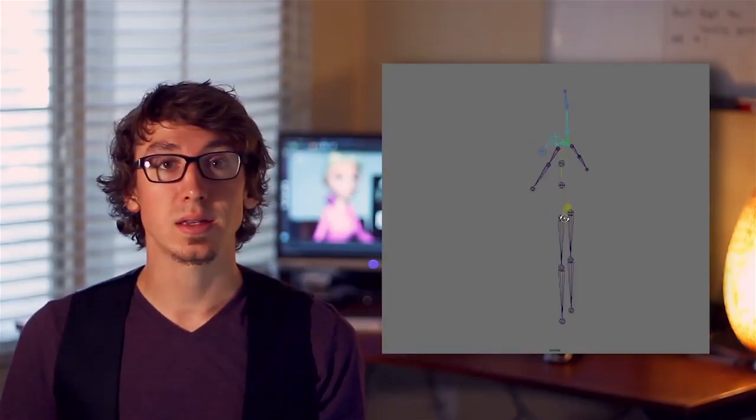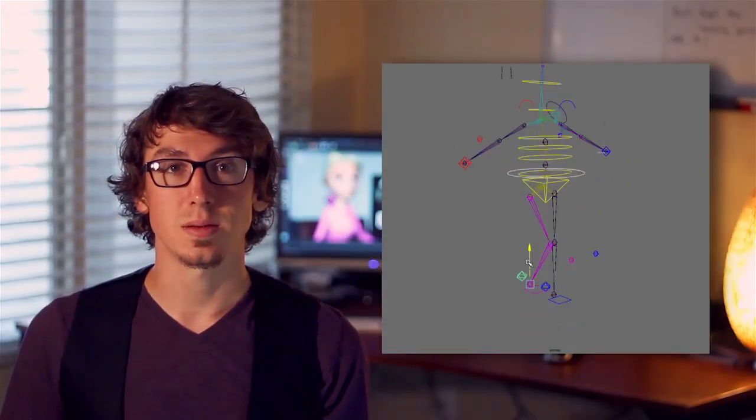During rigging, a skeleton is created to provide simple yet versatile controls for the animators. Complexity of rigs varies greatly depending on the character and story requirements. The rig is attached to the model through a process called weight painting. Each bone has a color that shows its influence, or weight, on the model. Painting weights that function well in every position can be a very tedious process. Facial movements are also created and plugged into animator-friendly controls.